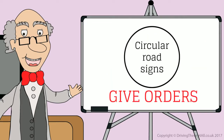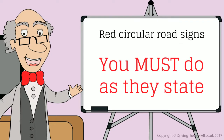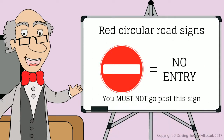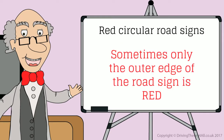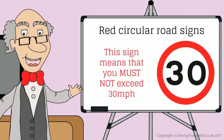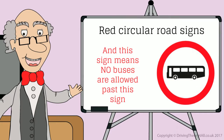Circular road signs give orders. Red circular road signs — you must do as they state. For example, this sign means no entry; you must not go past this sign. Sometimes only the outer edge of the road sign is red. This sign means that you must not exceed 30 miles per hour, and this sign means no buses are allowed past this sign.